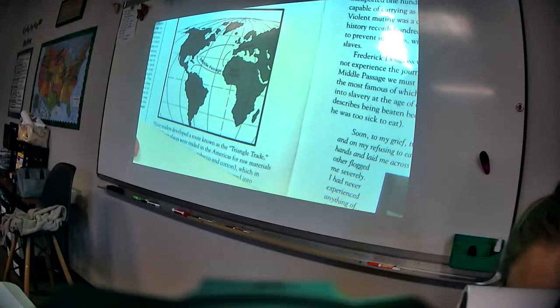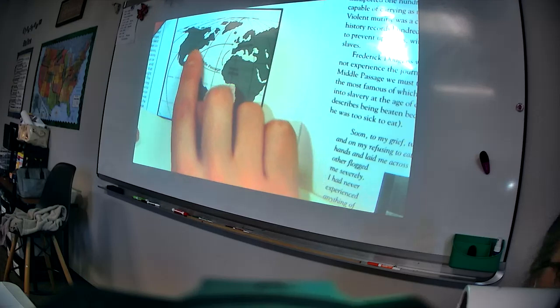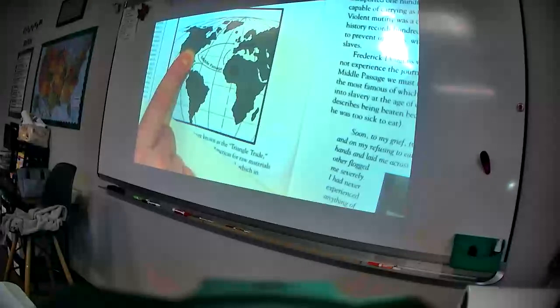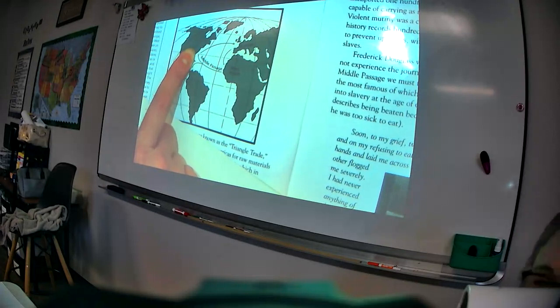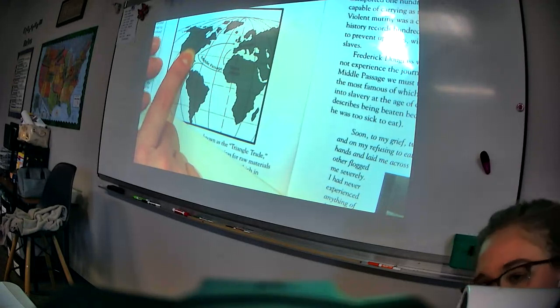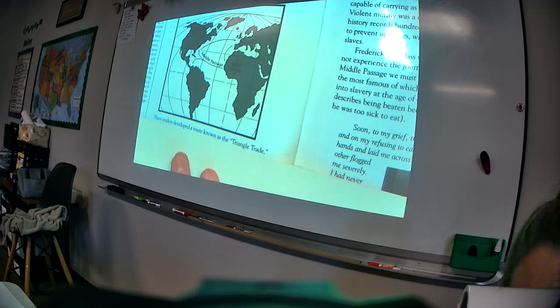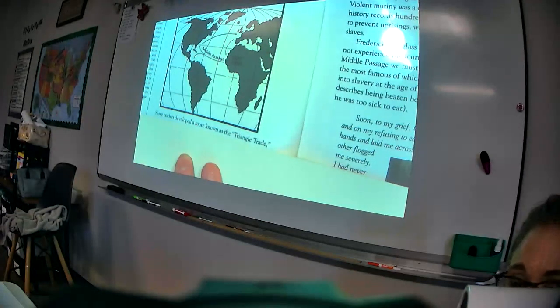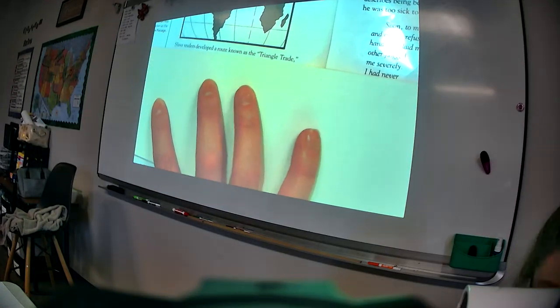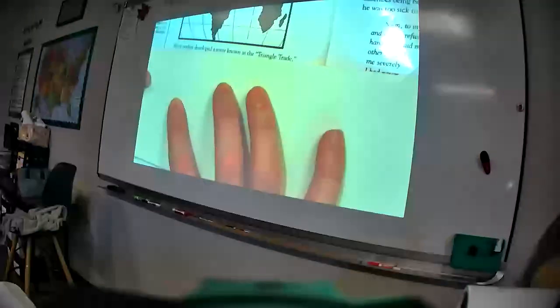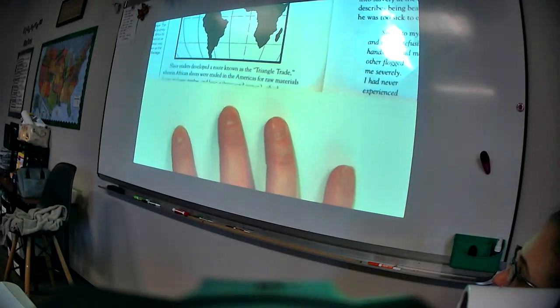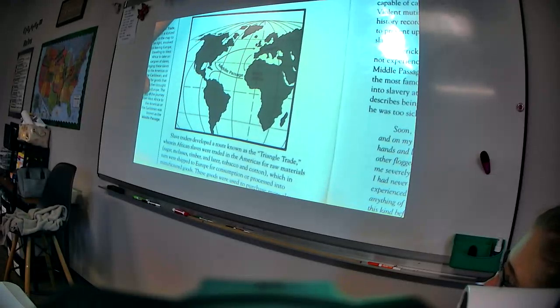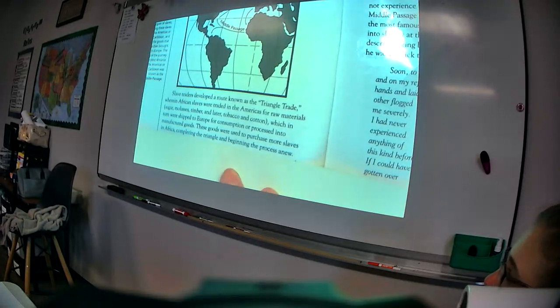In America, they would trade the slaves for raw goods, cotton, tobacco, corn, sugarcane, things like that. Then they would take the raw goods back to Europe and use them to manufacture more trade items, clothing, textiles, fabrics, and things like that. Then they would do it again. They would come to West Africa, trade the fabrics and textiles for slaves, and so on and so forth. Slave traders developed a route known as the Triangle Trade, wherein African slaves were traded in the Americas for raw materials, sugar and molasses, timber, tobacco, and cotton. Which, in turn, were shipped to Europe for consumption or processed into manufactured goods. These goods were used to purchase more slaves in Africa, completing the Triangle and beginning the process anew.